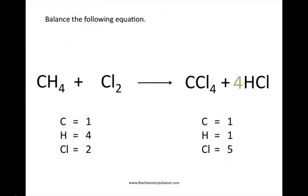Now if we count up the number of each type of atom on both sides, we still have one carbon atom on both sides, and now we have four hydrogen atoms on the reactant side and four hydrogen atoms on the product side. But by putting a four coefficient in front of HCl on the product side, we've also increased the number of chlorine atoms on the product side as well. We now have four hydrogen atoms and eight total chlorine atoms — four from CCl4 and four from our four molecules of HCl.